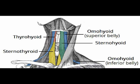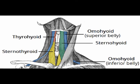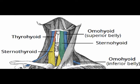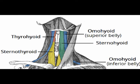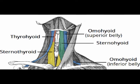The omohyoid muscle originates on the superior border of the scapula and inserts into the inferior edge of the hyoid bone. The sternohyoid muscle originates on the back of the manubrium and inserts onto the medial part of the inferior border of the hyoid bone.